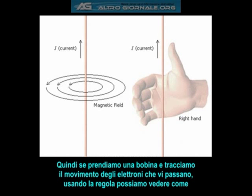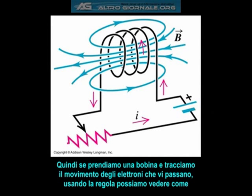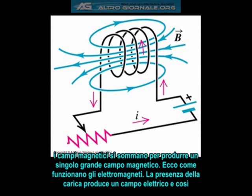So if we take a coil of wire and trace the movement of the electrons passing through it using the right-hand rule, we can see how the magnetic fields all add up to produce a single large magnetic field. This is how electromagnets work.